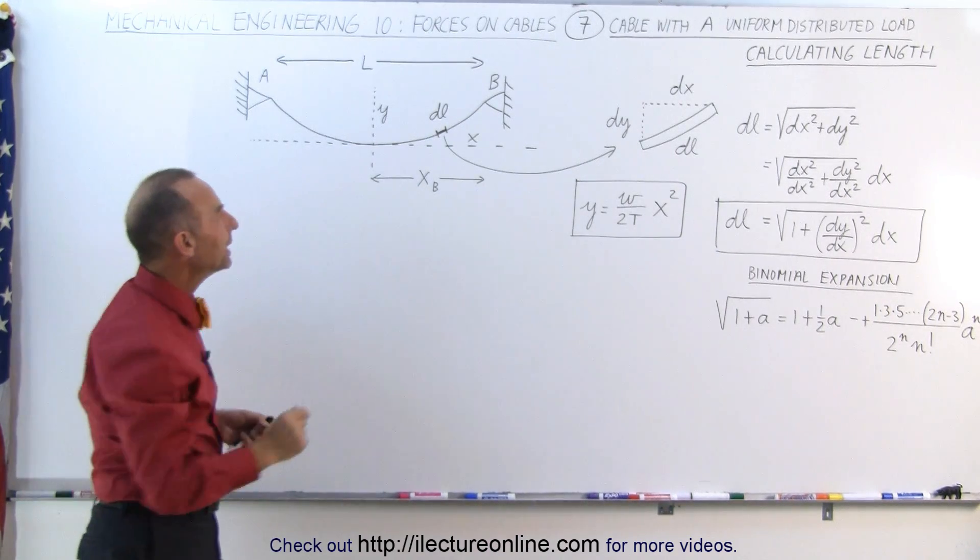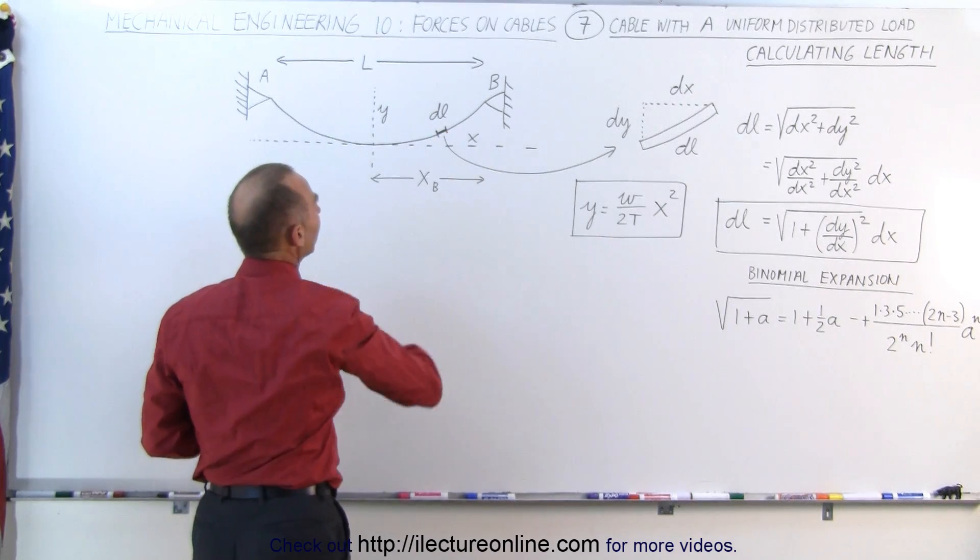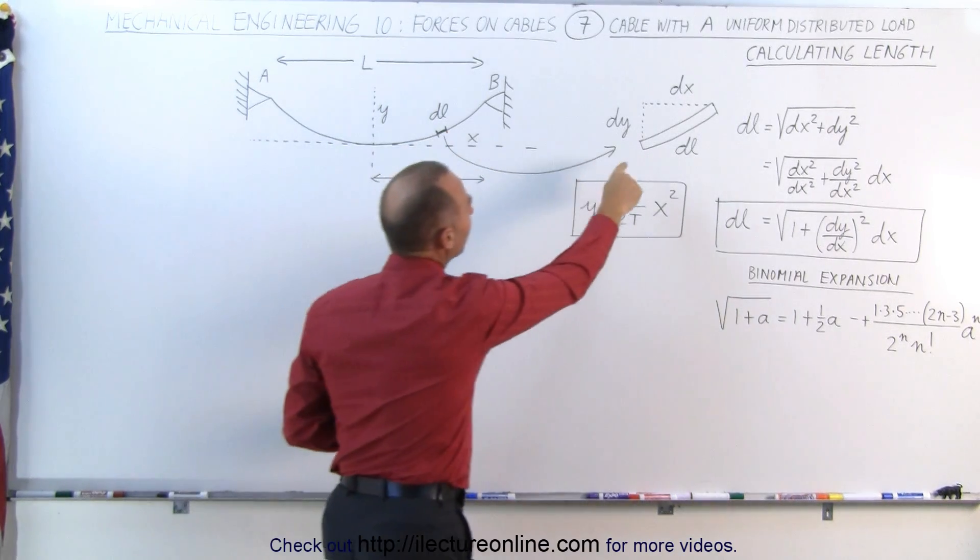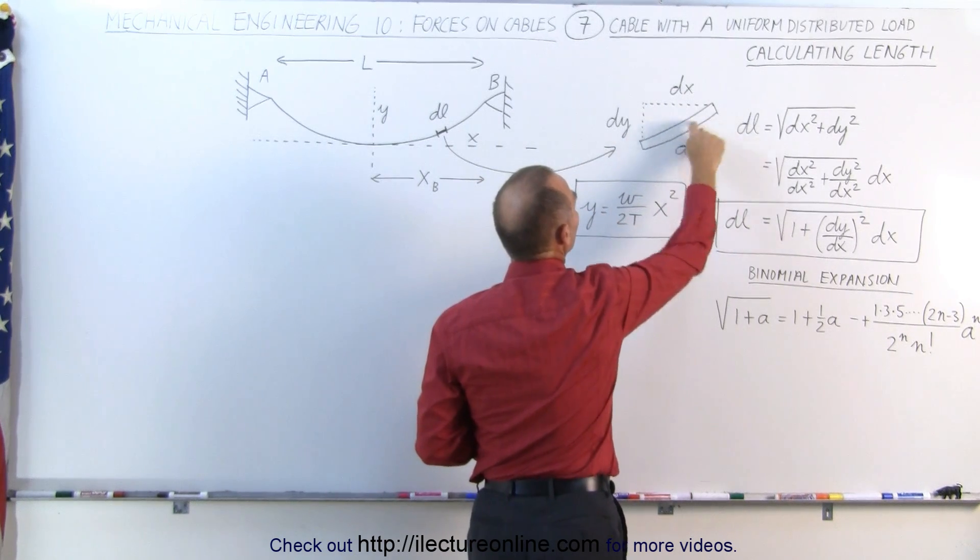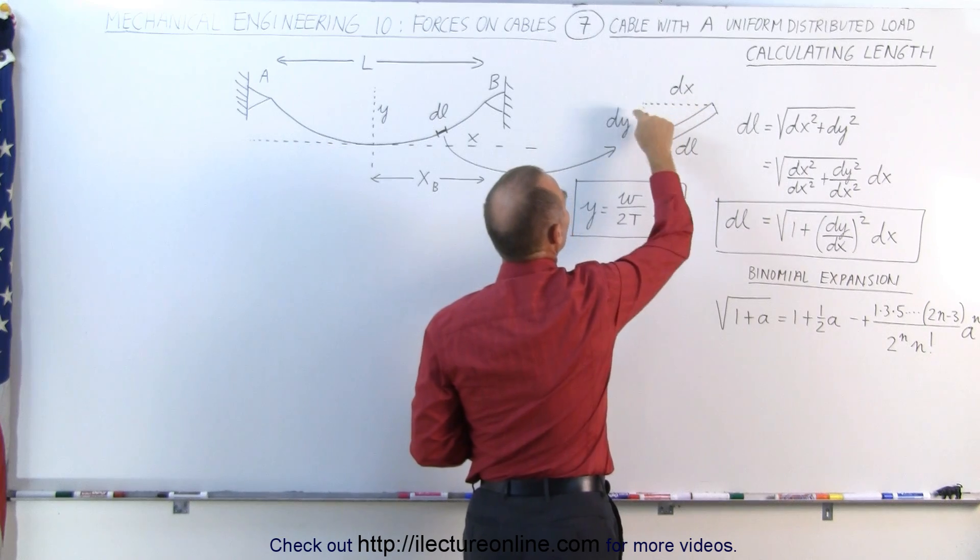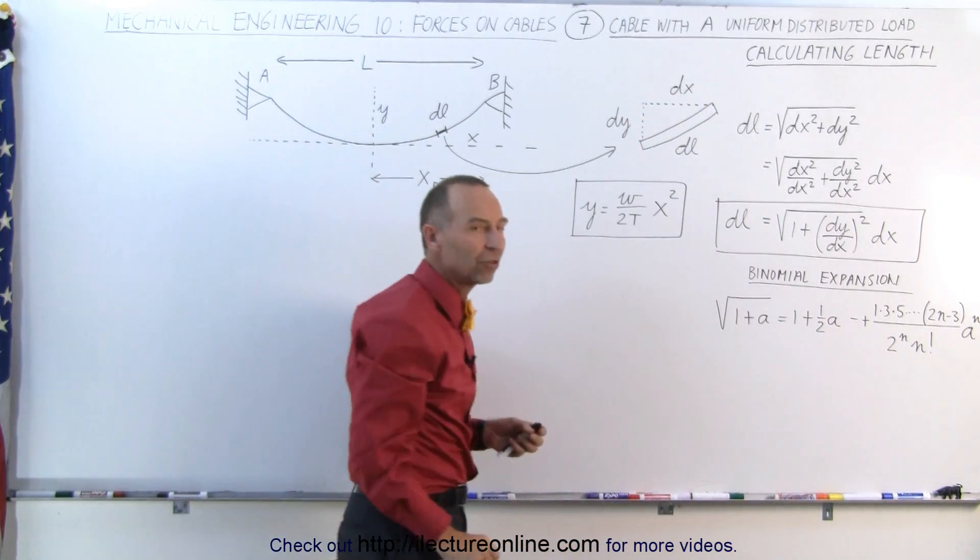To do that we need to take a small section of the cable, let's call that DL, and if we blow that up here, here's our DL and you can see that forms a triangle where DL is the hypotenuse and DX and DY are the two sides of that triangle.